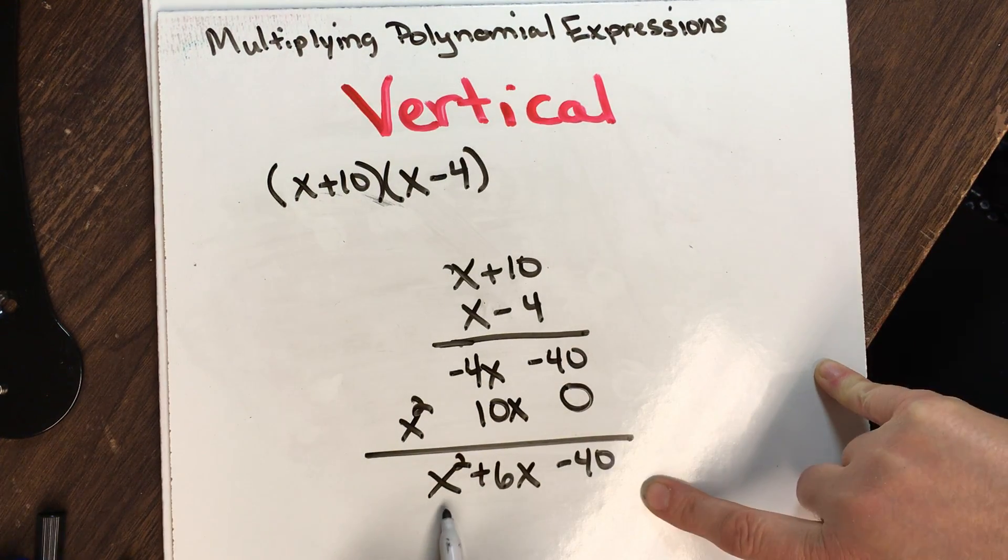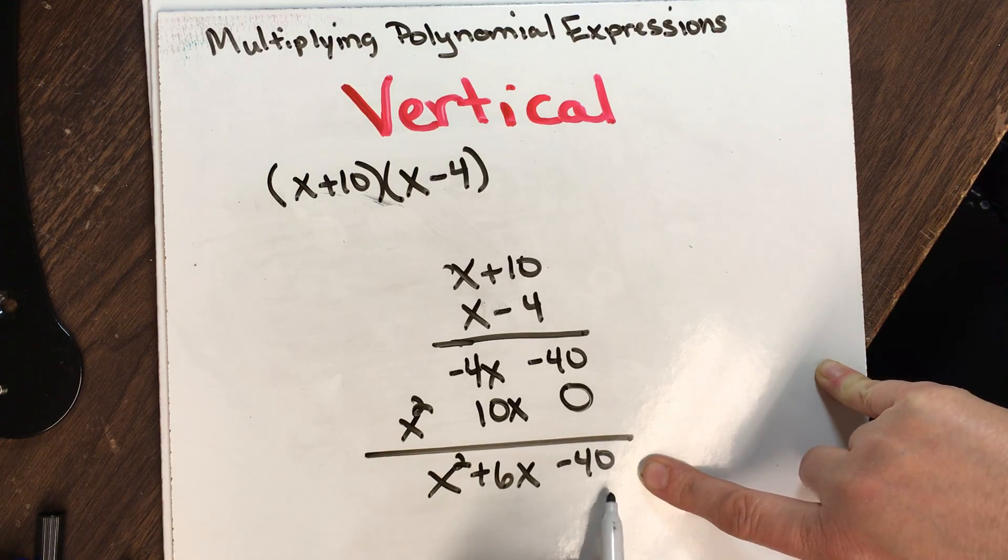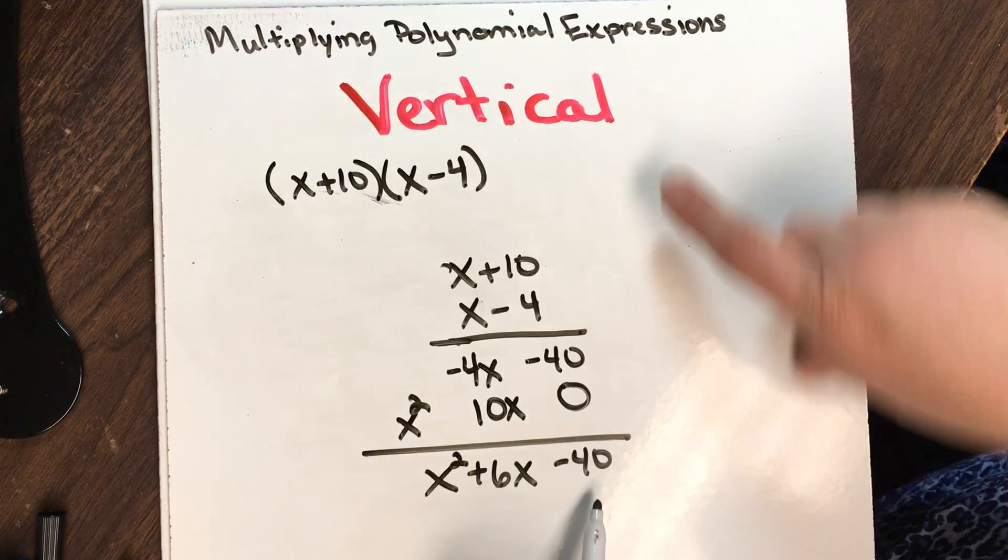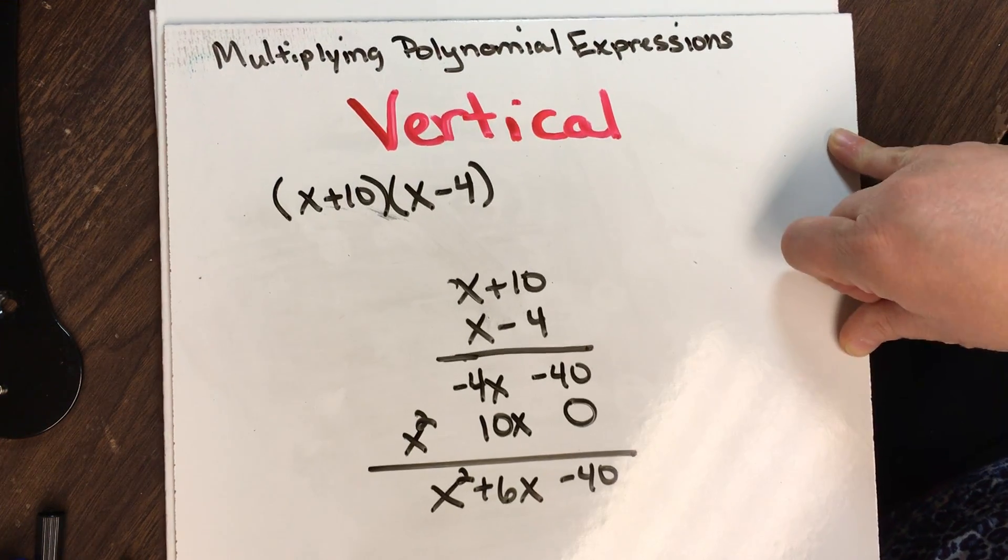I'm already in standard form, largest exponent to smallest. x squared plus 6x minus 40. This is the vertical method. Give it a try.